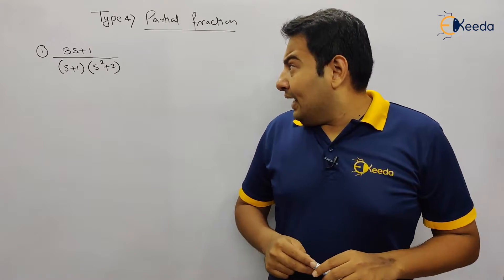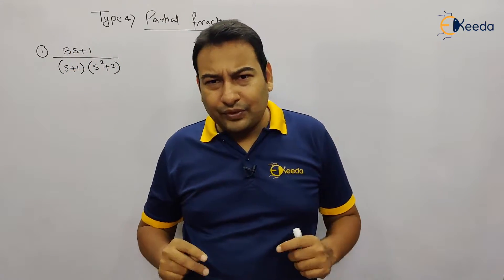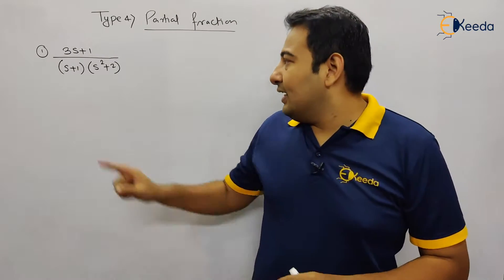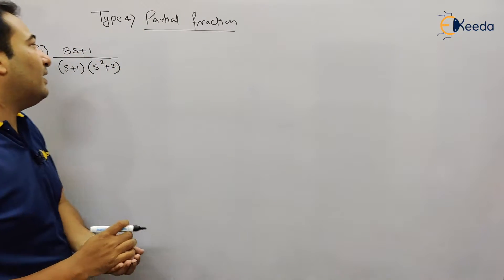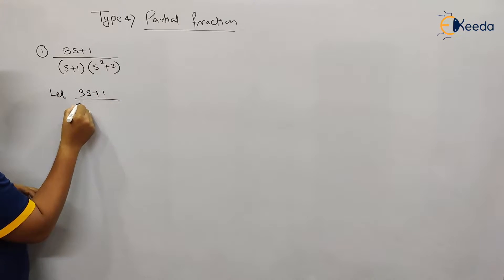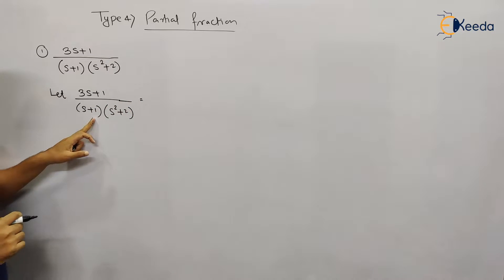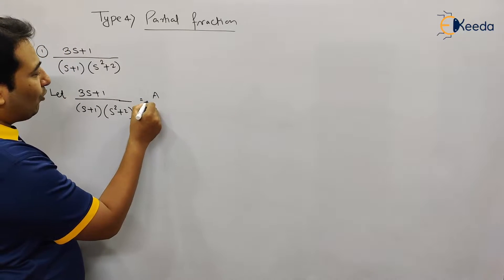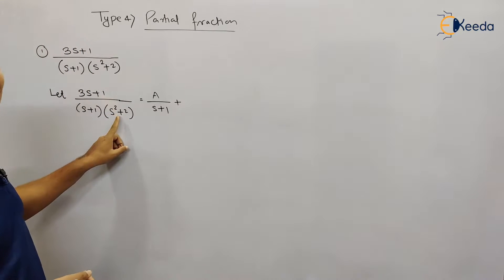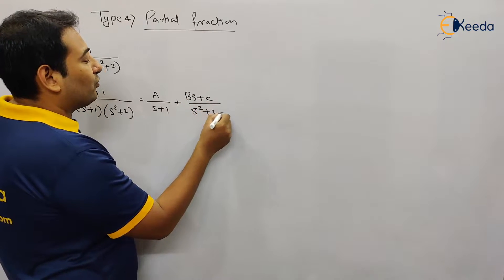In partial fraction, the numerator doesn't matter — here we have 3s plus 1, it may be any function in the numerator. What matters is the denominator. This is our given function. There are two factors: this is your linear algebraic factor, therefore it will be A upon (s+1), plus this is your square factor and its root is not possible, therefore we write it as Bs plus C upon s squared plus 2.